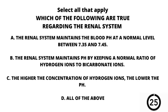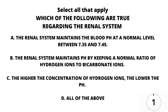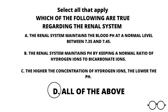Question number 15. Select all that apply. Which of the following are true regarding the renal system? A, the renal system maintains the blood pH at a normal level between 7.35 and 7.45. B, the renal system maintains pH by keeping a normal ratio of hydrogen ions to bicarbonate ions. C, the higher the concentration of hydrogen ions, the lower the pH. Or D, all of the above. Our answer here is D — all of the above. A, B, and C are all true statements regarding the renal system.